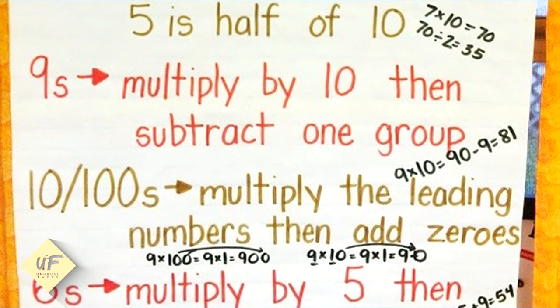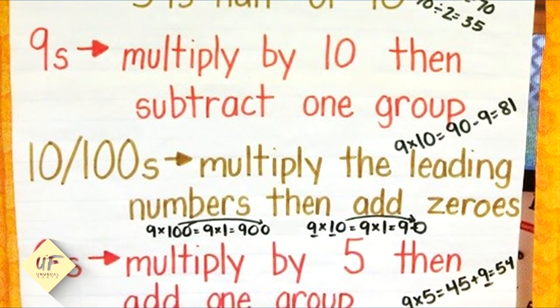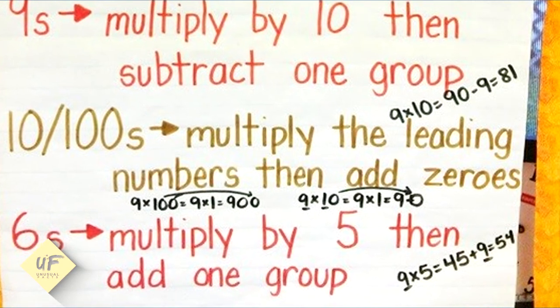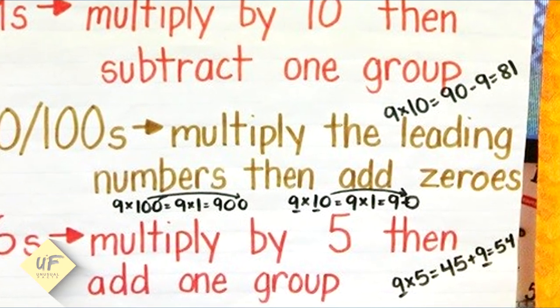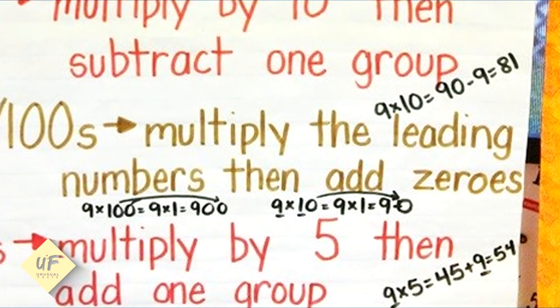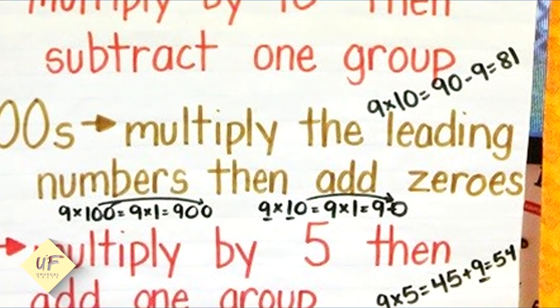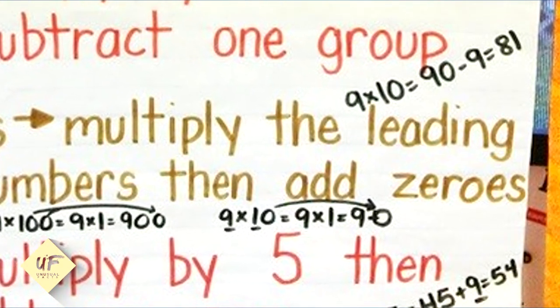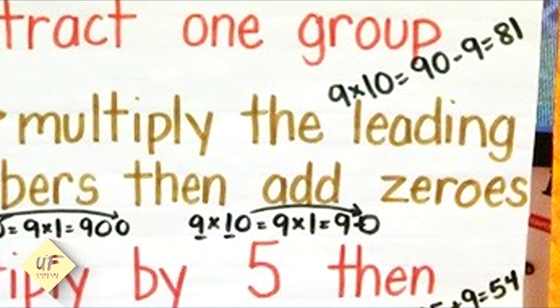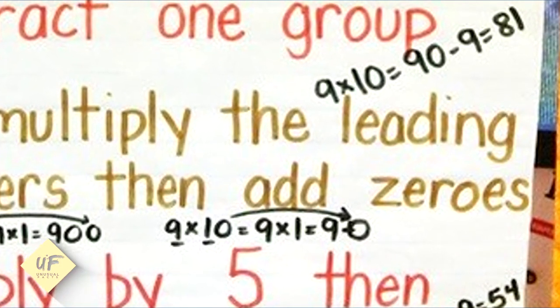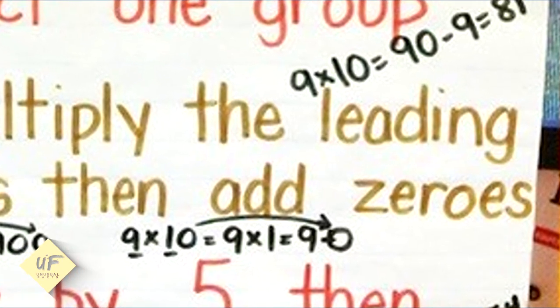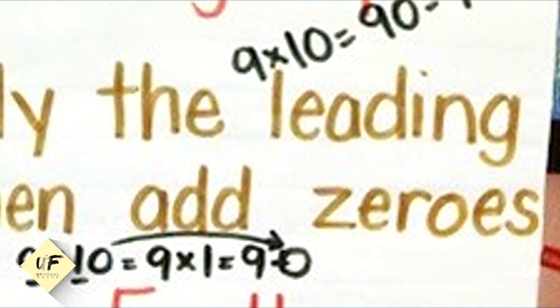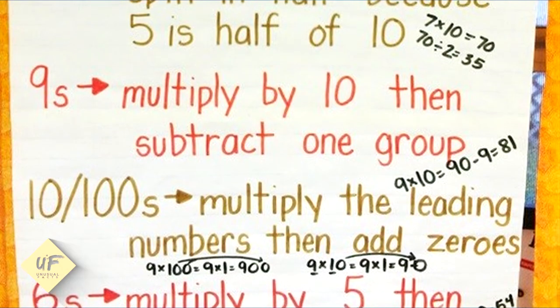9's: Multiply by 10 then subtract one group. 9 times 10 equals 90, minus 9 equals 81. 10's and 100's: Multiply the leading numbers then add zeros. 9 times 100 equals 9 times 1, then you add those two zeros to the end, so 900. 9 times 10 equals 9 times 1 equals 9, and then you add that zero to the end.